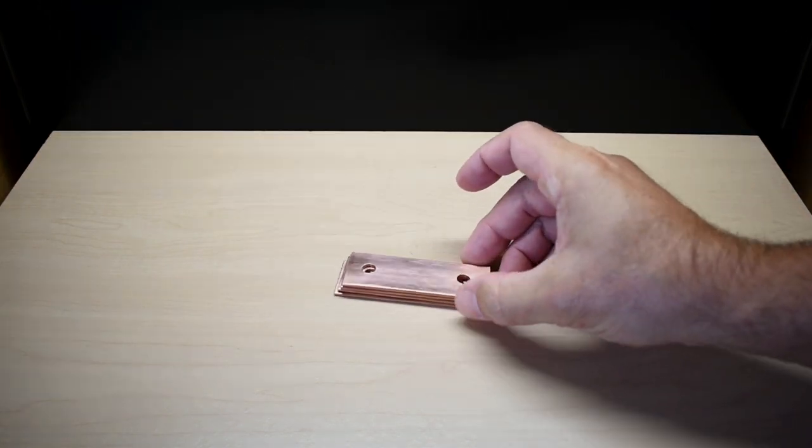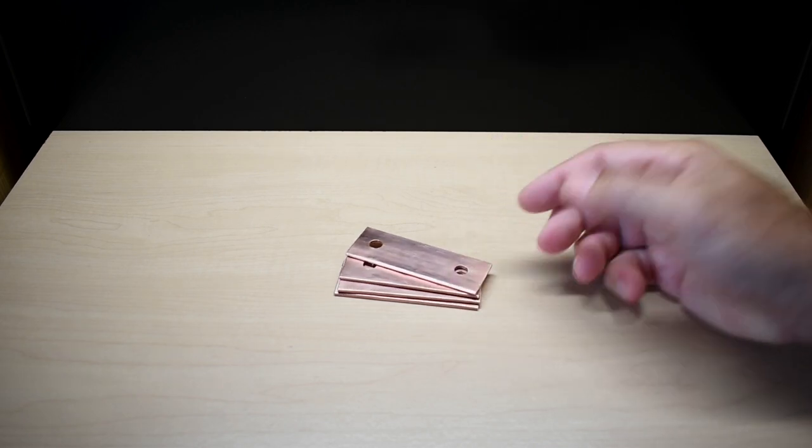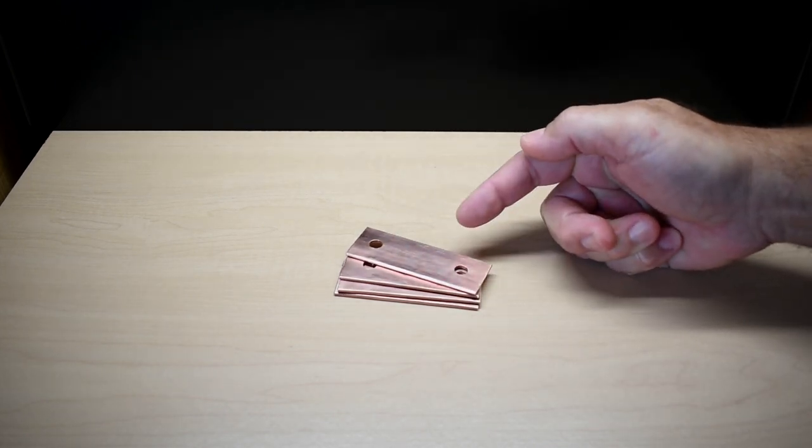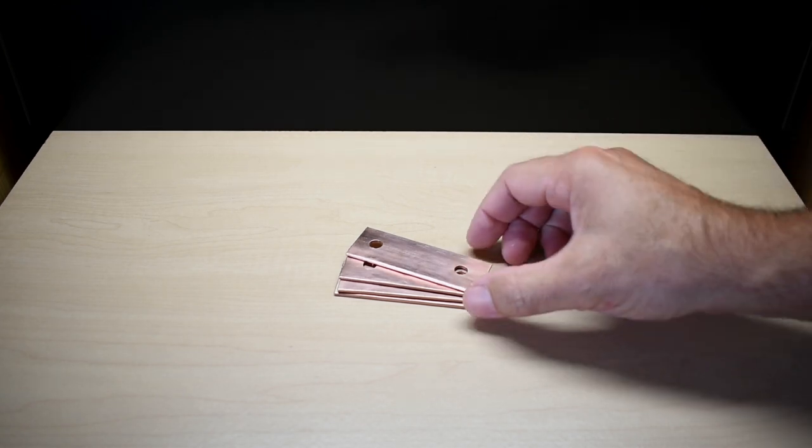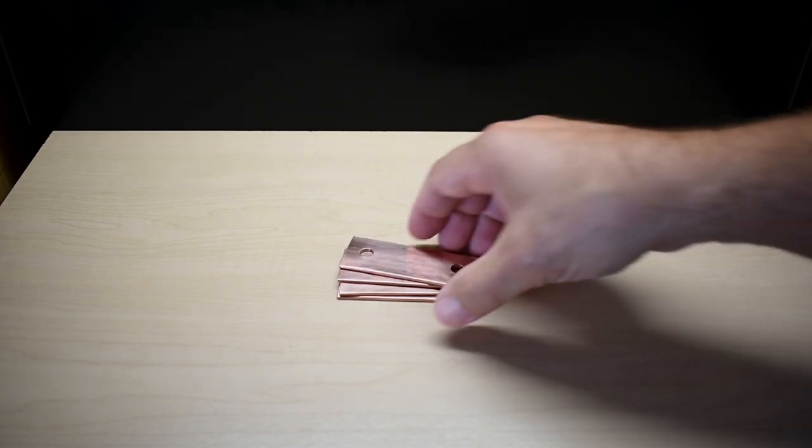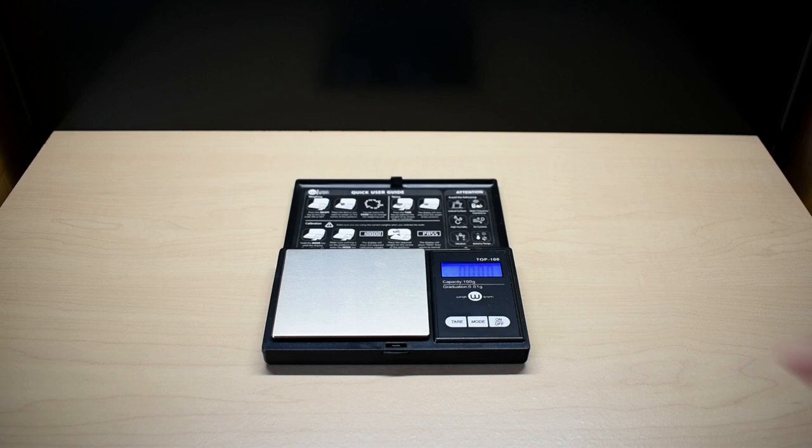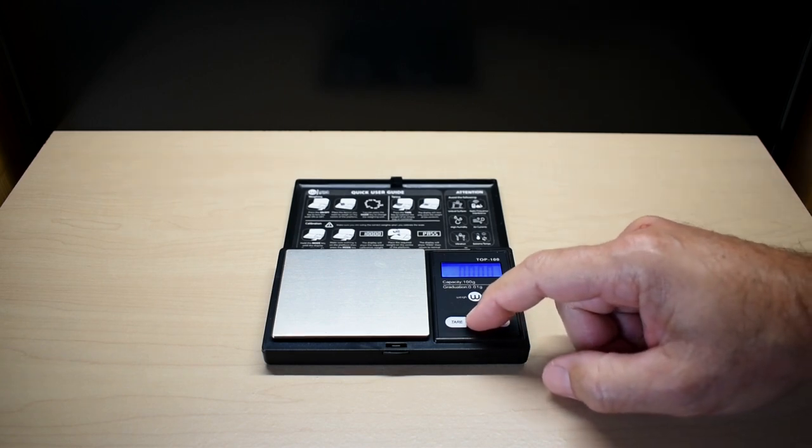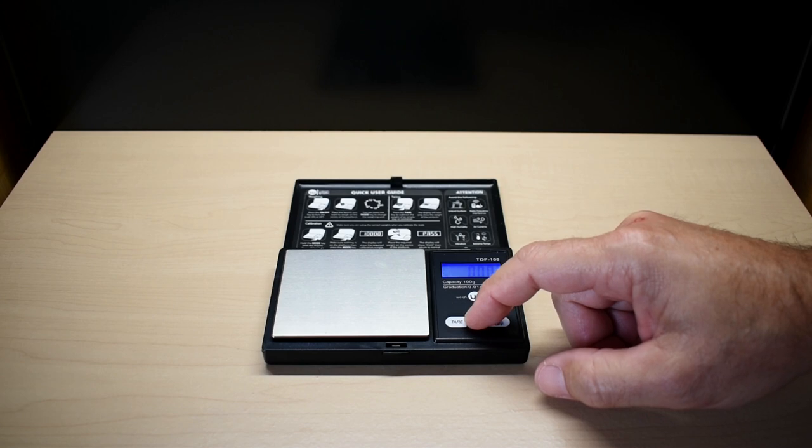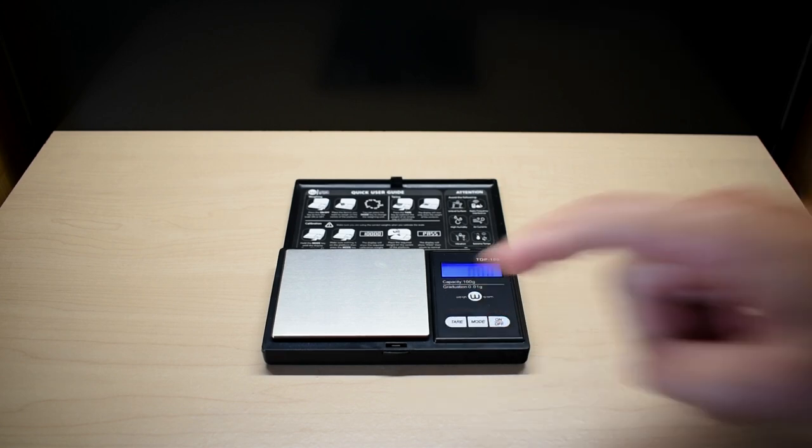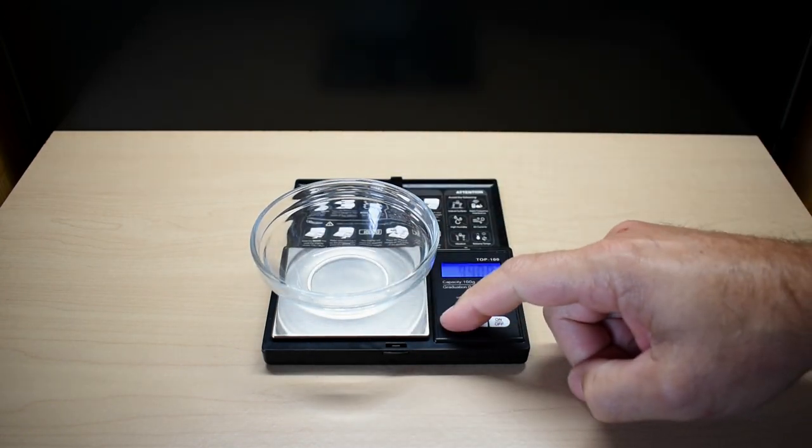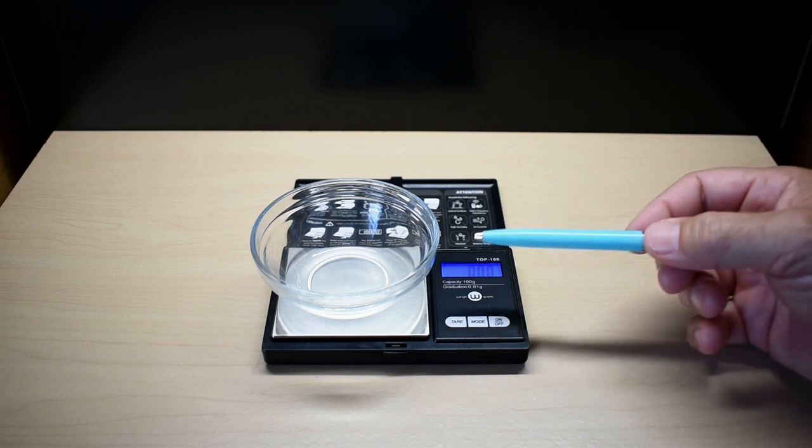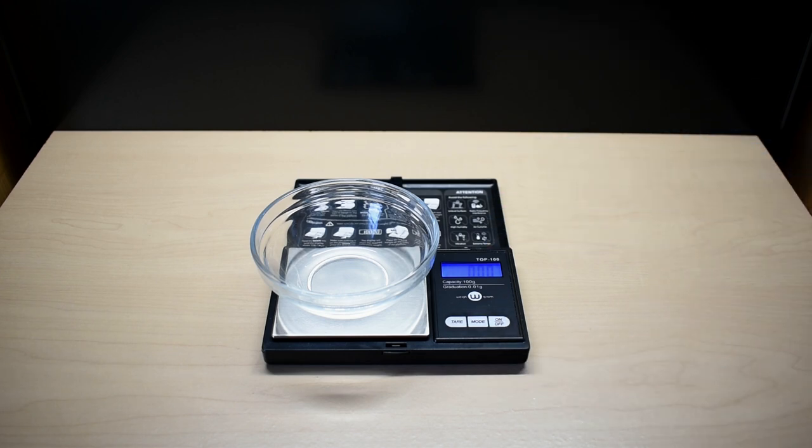The first step of the nickel plating process is to get the metal that you want to plate and get it bright and shiny. You can take a wire wheel to it, you can use abrasive paper, you can also use some double O or triple O steel wool. Just get it nice and shiny. The second step, we're going to measure out the chemicals. You're going to set the scale to grams. Take one of the bowls, place it on top, and now I'm going to press tare.